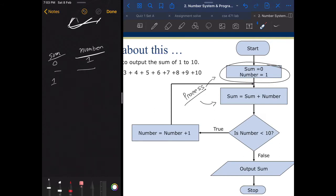Then, is number less than 10? So number is 1, right? And is 1 less than 10? Of course it is, so we are going to go to the true side. And in the true side we increase number by 1. So number equals to number plus 1, so number becomes 2.